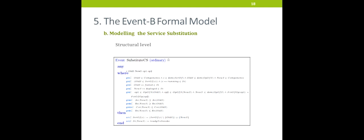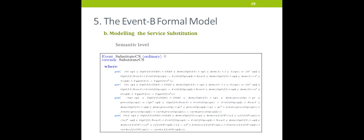In the semantic level, we refine the substitute_CS event to check the semantic compatibility between OldS and NewS. The new service must preserve the composition consistency in terms of vertical and horizontal matching, expressed in guards 6 and 7. The new service must have the same inputs as OldS in order to execute and must produce the same outputs as OldS. NewS and OldS must also be compatible in terms of preconditions and effects, which is captured by guards 8 and 9.